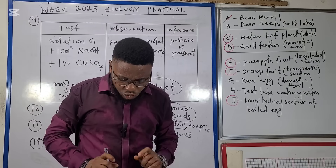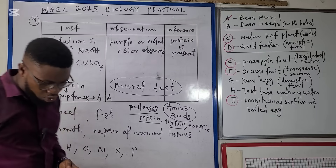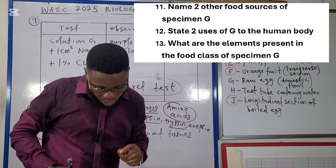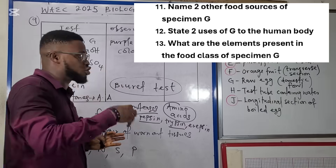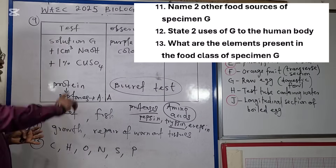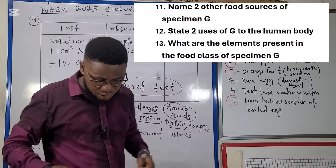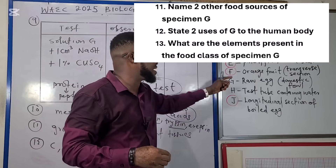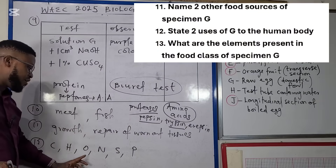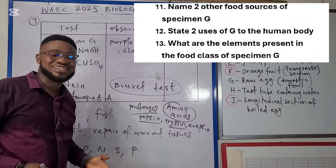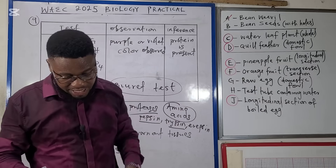The next question asks: state two uses of specimen G to the human body. Since specimen G is a protein, it is needed for growth and for repair of worn-out tissues. The elements present in the food class of specimen G — protein — are carbon, hydrogen, oxygen, nitrogen, sulfur, and phosphorus.